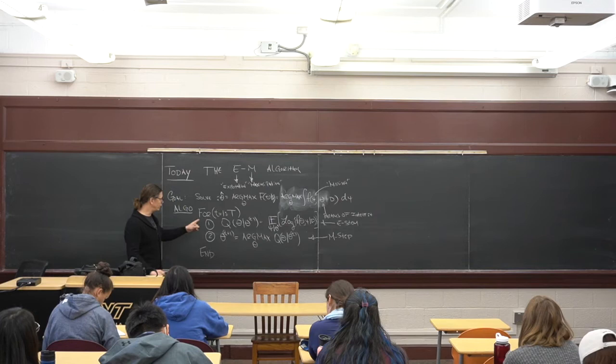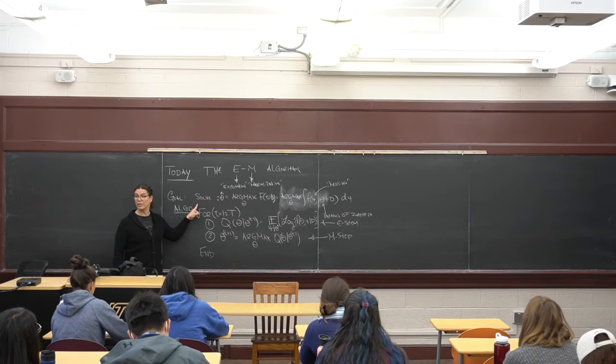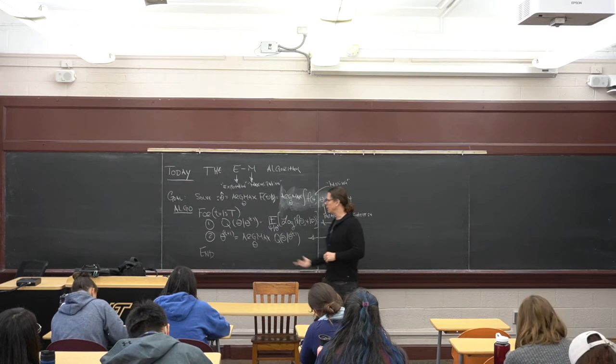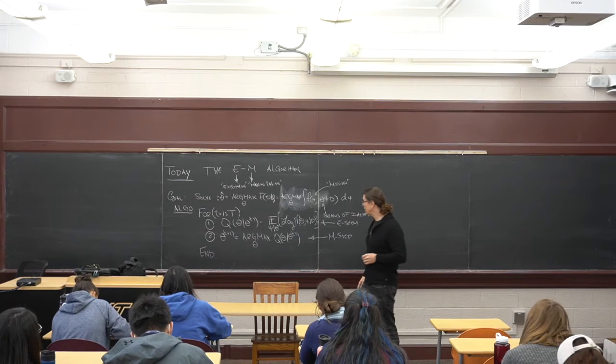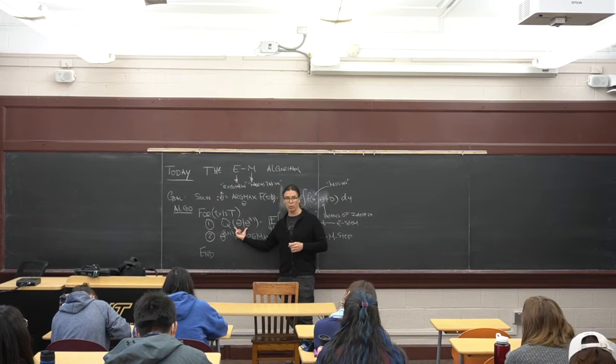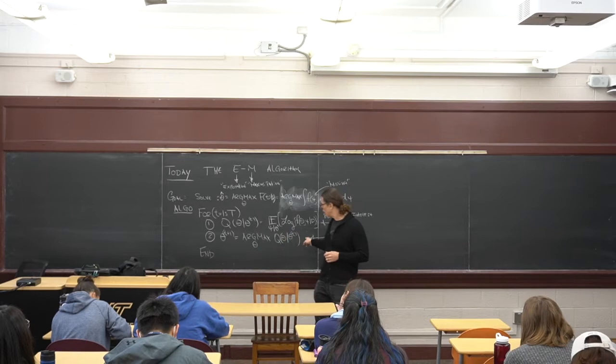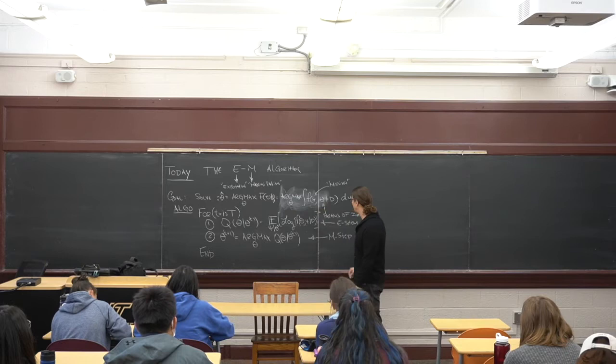What the EM algorithm does is follow two iterations. There's a step zero where you need to initialize everything, and then you solve this expectation to come up with the Q function. Typically once you have this solution in closed form, if the parametric form isn't changing, all you're doing is iteratively solving this maximization over and over again. So let's look at what this expectation is - it's just the integral of the logarithm of the joint.